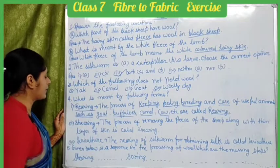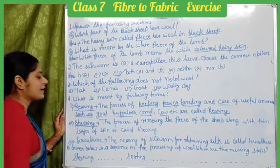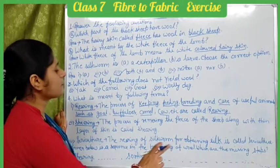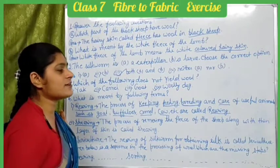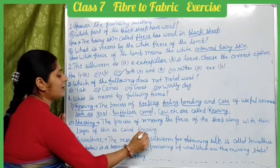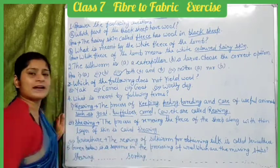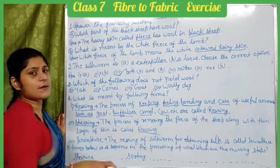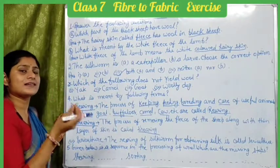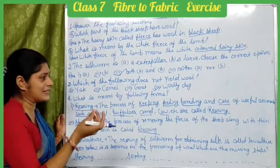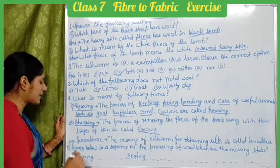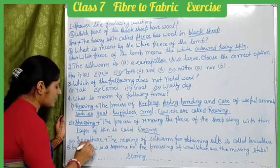The next term is 'shearing.' The process of removing the fleece of the sheep along with a thin layer of skin is called shearing. We had studied that the first step in wool processing is to remove the fleece with a thin layer of skin — this process is called shearing.